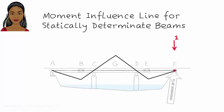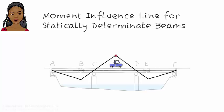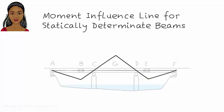So where should a vehicle be located in order for bending moment at G to reach its maximum positive value? The vehicle must be on top of point G. And where should the vehicle be for the moment at G to attain its maximum negative value? The diagram shows two peak negative values — one at point B and the other at point E. This means bending moment at G becomes maximally negative when a vehicle is at point B while another vehicle is at E. A moment influence line facilitates the determination of critical load patterns for bending moment in beams.